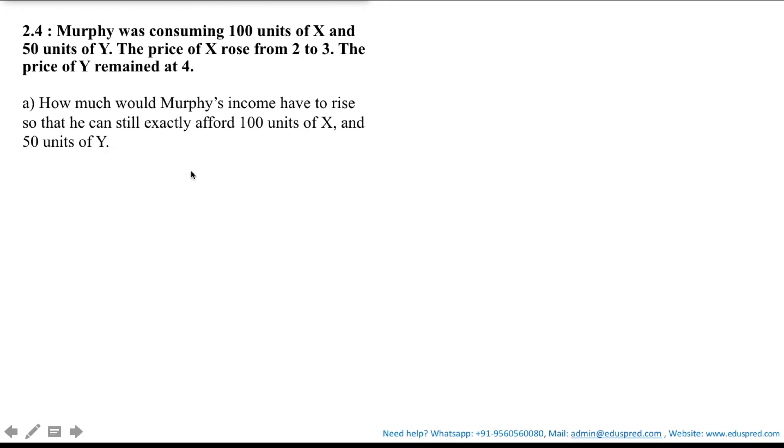Let's first see what all information is given to us. So we have that Murphy can consume 100 units of X and 50 units of Y which means this is your consumption bundle.